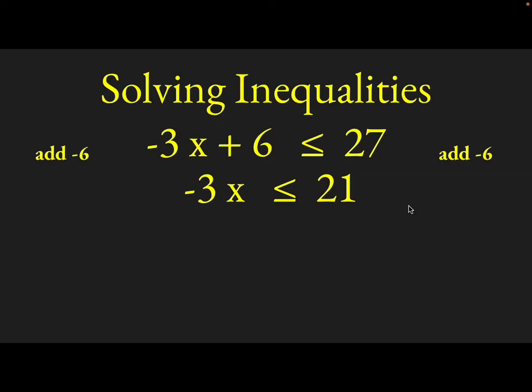So you get negative 3x less than or equal to 21. You wouldn't flip the inequality sign here because we haven't multiplied or divided by a negative number.